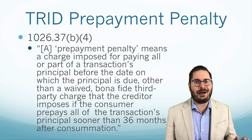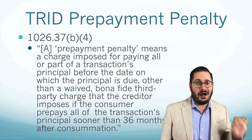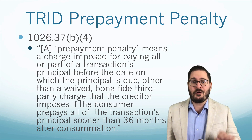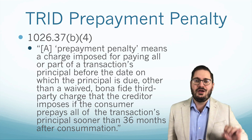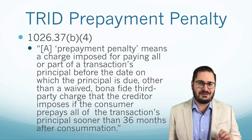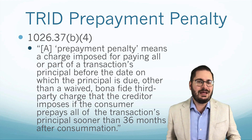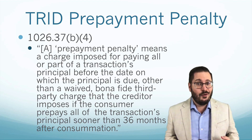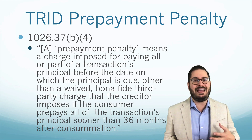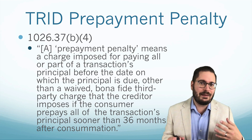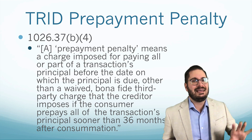But we don't have a period there — we have a comma. So if that was it, we would have one answer, but in fact it goes on to say this. It says 'other than a waived, bona fide, third-party charge that the creditor imposes if the consumer prepays all the transaction's principal sooner than 36 months after consummation.' So what we're talking about here is a waived, bona fide, third-party charge — not a bank charge like an origination fee. If you have an origination fee and you charge that if they pay early, that is considered a prepayment penalty. But if it's a bona fide third-party charge, then it could potentially not be.